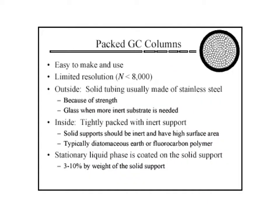A packed column consists of tiny solid particles with a thin coating of the liquid phase packed into a small diameter tube. Here you can see a cross-section of a packed column. The column material appears to fill the entire interior column space, but in actuality it is not packed solid. An analogy would be a jar filled with sand — to your eye there does not appear to be any space between the sand particles, however there are gaps. Gas can move through the packed material in the same manner, bringing the components of your mixture through the tiny spaces. These are the least expensive columns, with a number of theoretical plates usually less than 8,000.